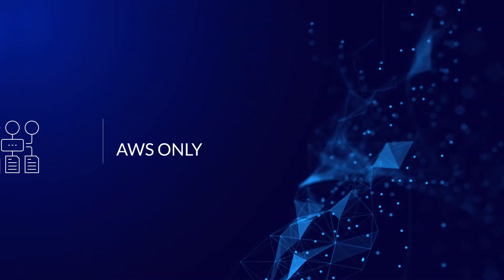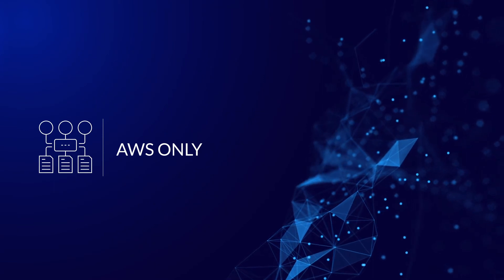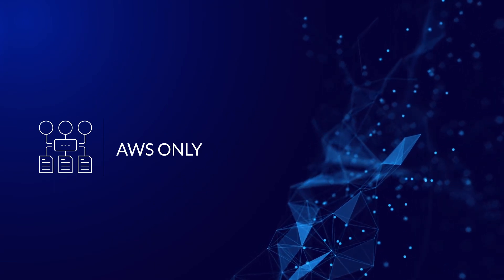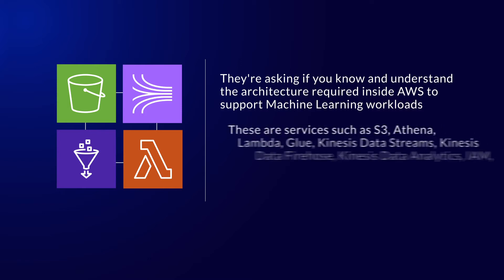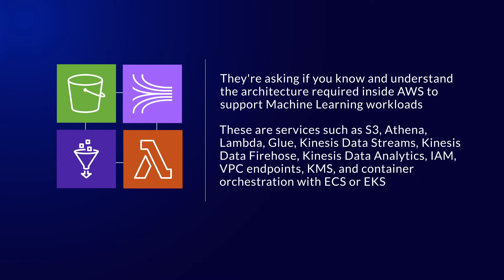The third category of questions involves using the AWS cloud in ways that have nothing to do with machine learning directly. They might describe a machine learning problem, but what they're asking is that you know and understand the AWS architecture required to support machine learning workloads. These are services such as S3, Athena, Lambda, Glue, Kinesis Data Streams, Kinesis Data Firehose, Kinesis Data Analytics, IAM, VPC Endpoints, KMS, and container orchestration with ECS or EKS.